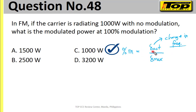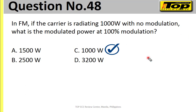Because percent modulation in FM doesn't involve amplitude — it involves frequency. So the answer for question number 48 is letter C.